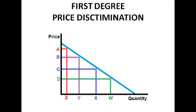First degree requires very much separation of the market for each individual customer. This maximises profit because each unit is charged at the maximum price that consumer is willing to pay, so their consumer surplus should be zero. Essentially, we'd sell quantity Z at price A because those Z customers we know are prepared to pay price A, and then sell further units at price B, and so on.